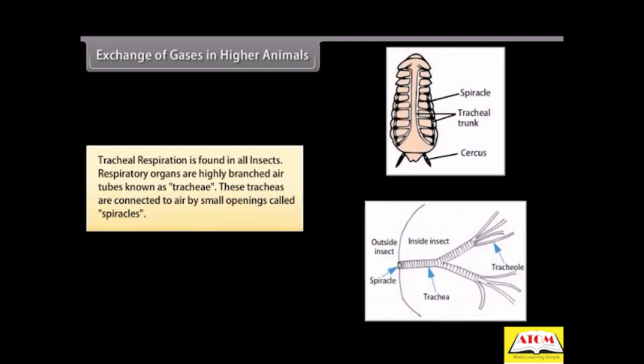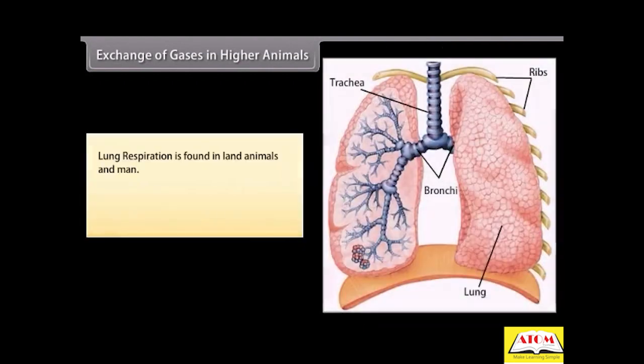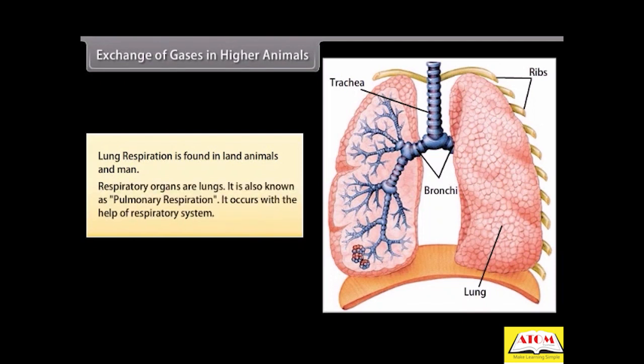Tracheal respiration is found in all insects. Respiratory organs are highly branched air tubes known as trachea. These tracheas are connected to air by small openings called spiracles. Lung respiration is found in land animals and man. Respiratory organs are lungs. It is also known as pulmonary respiration. It occurs with the help of respiratory system.